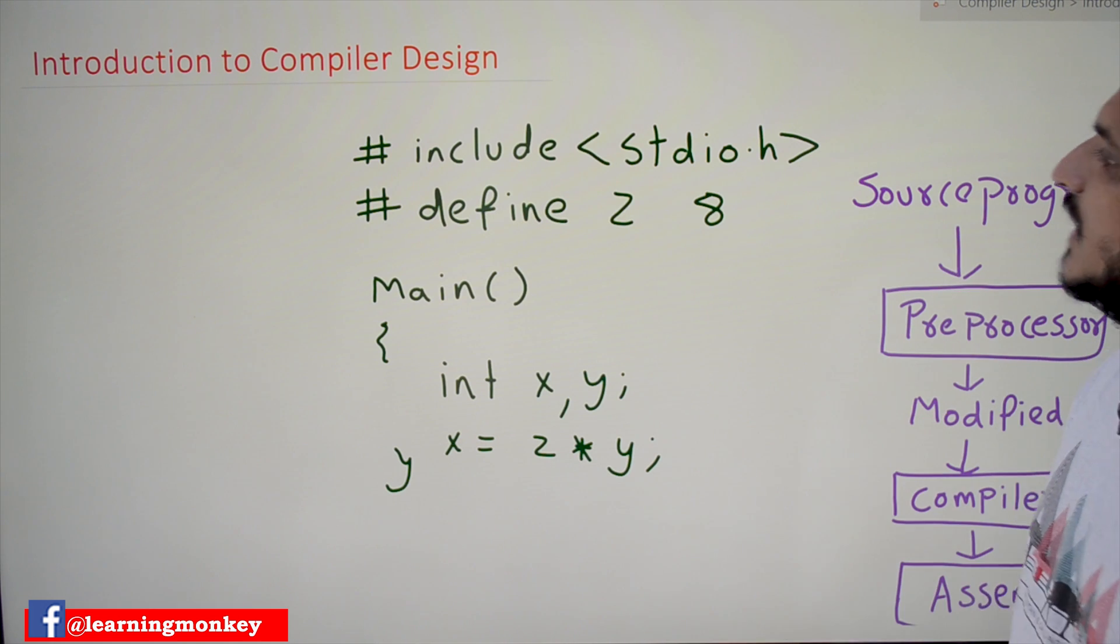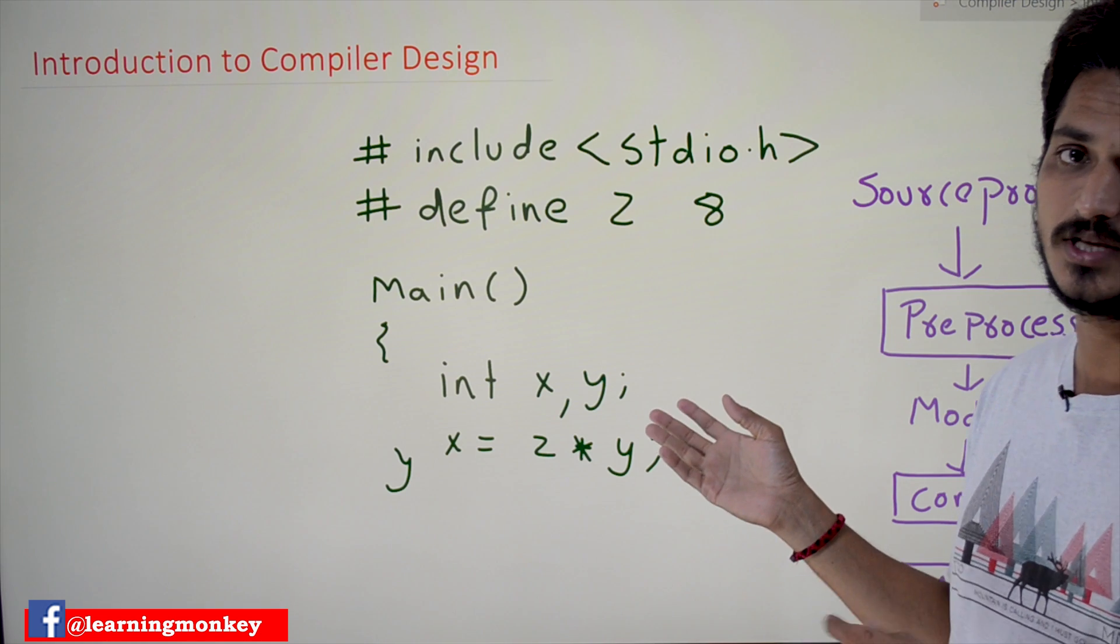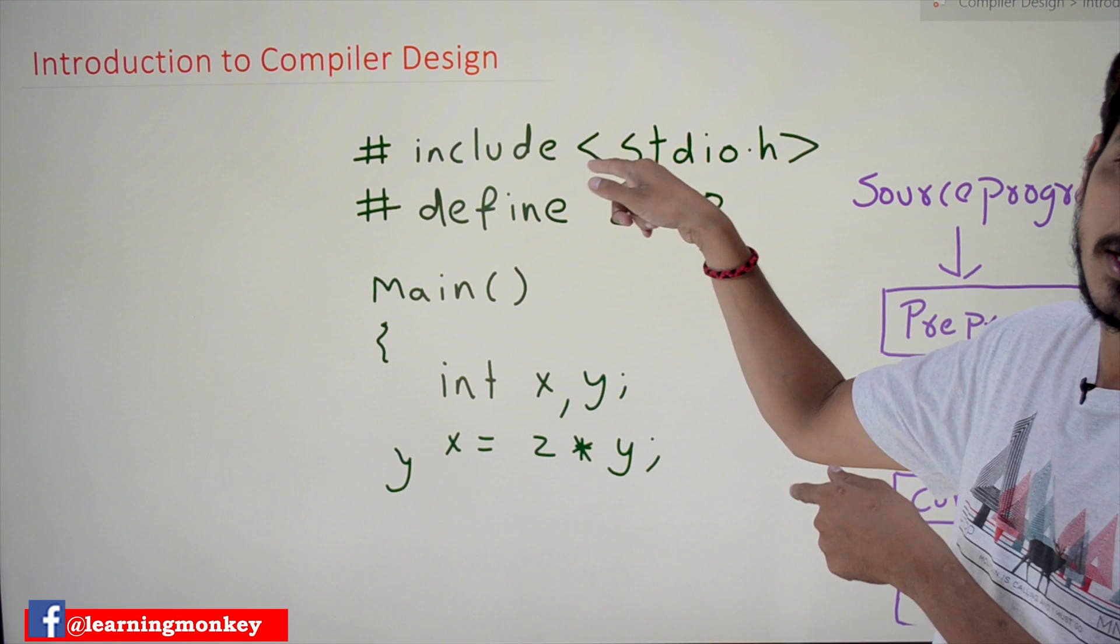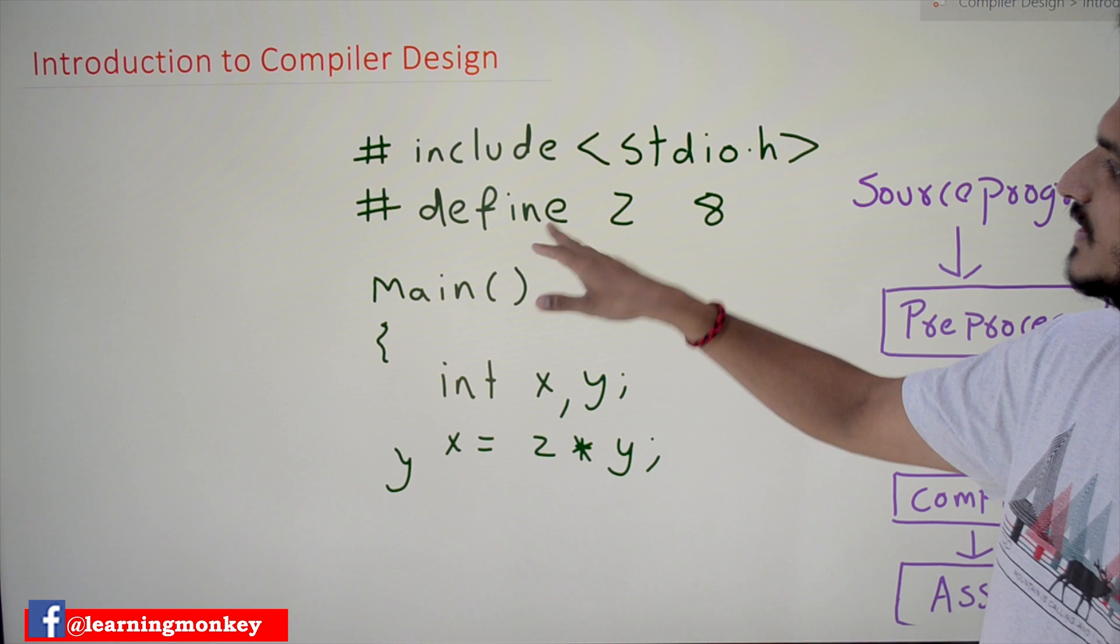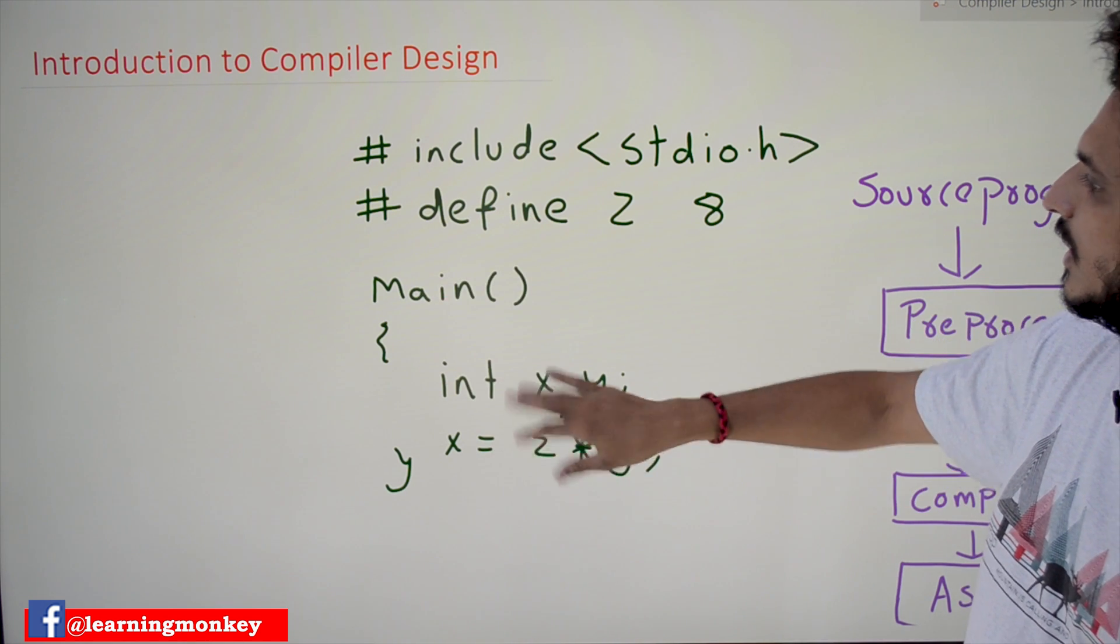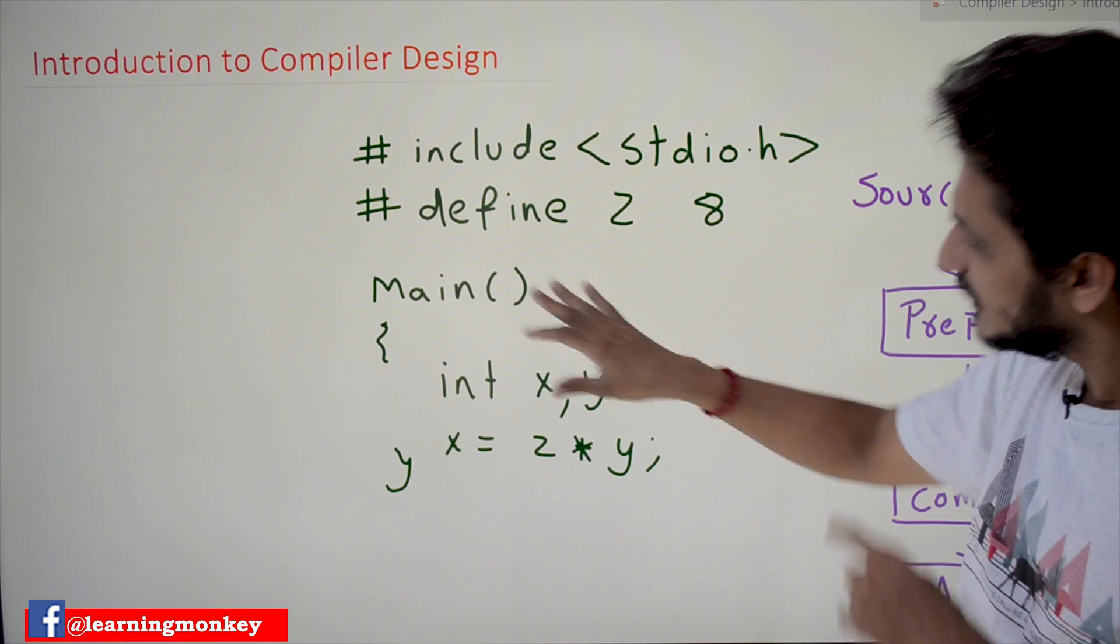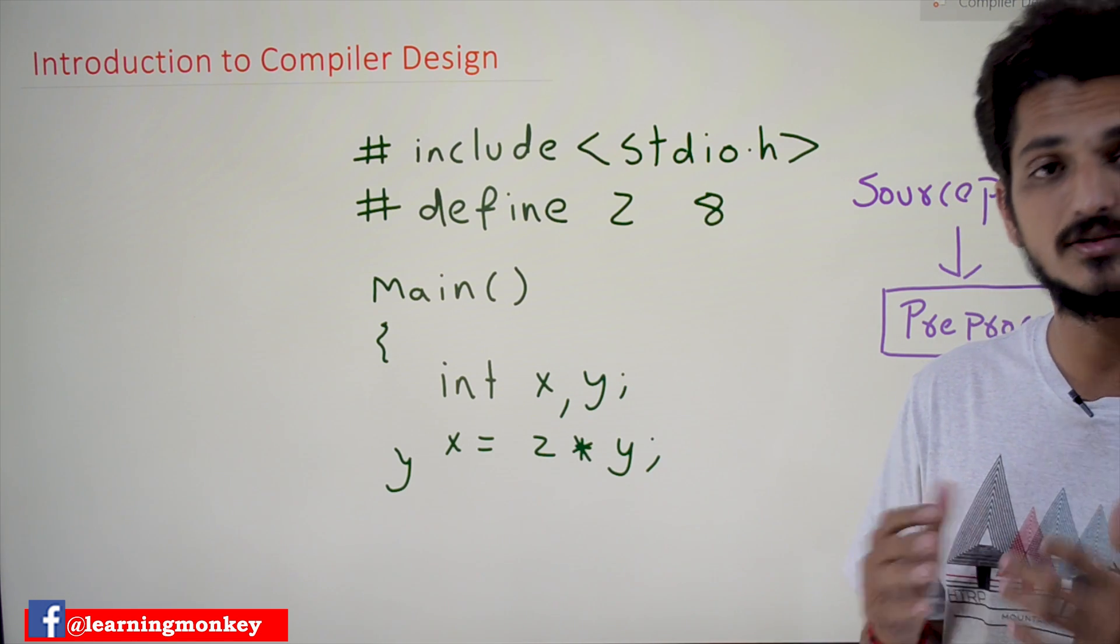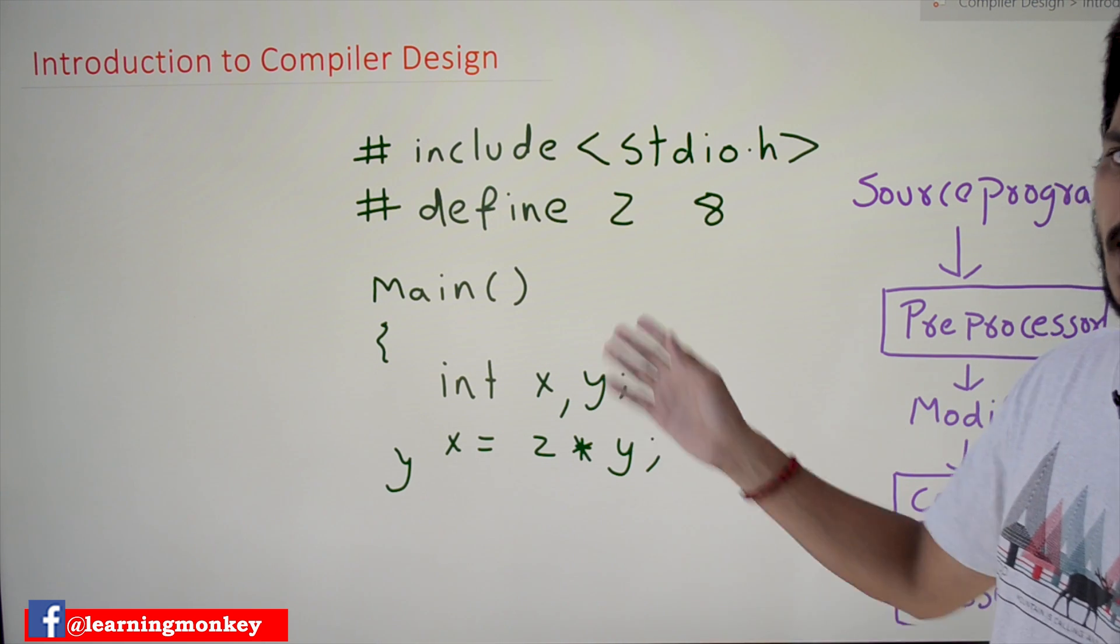Assume this is our high-level language - C language we have chosen. #include stdio.h - what's the meaning of this header file? Header file means we can access some code already present in this header file. #define Z 8 - this is the main code, main function. What's the meaning of this? In the program, wherever you find Z, replace it with 8. That is the meaning of macros in C language.